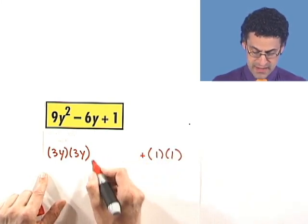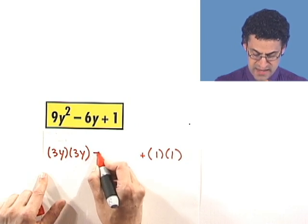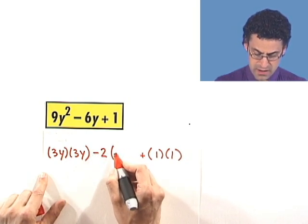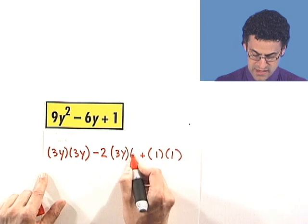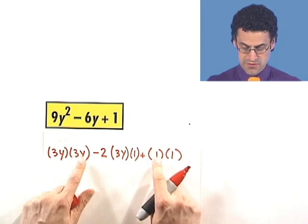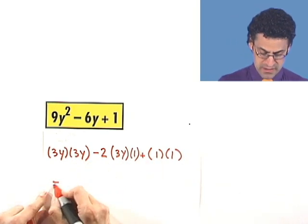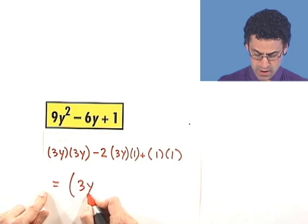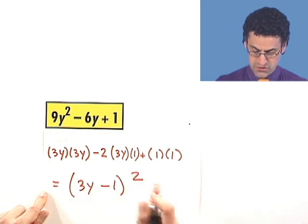And what about the thing in the middle? Well, I can write that as negative 2 times what? 3y times 1. 3y times 1. Therefore this tells me immediately I can write this as 3y minus 1 all squared.